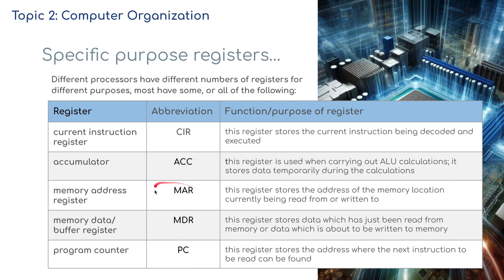These two — the MAR and the MDR — are the ones you need to know for the IB syllabus. The other three are not particularly important, but if you know them it is beneficial, especially if you've got a long question on an exam paper. The program counter (PC) stores the address where the next instruction to be read can be found.